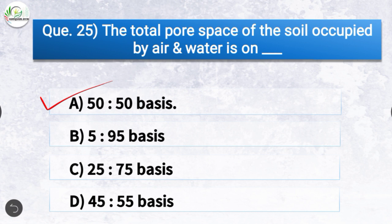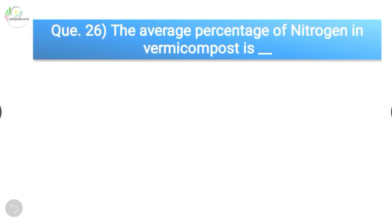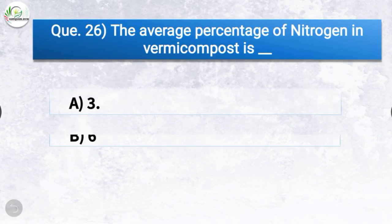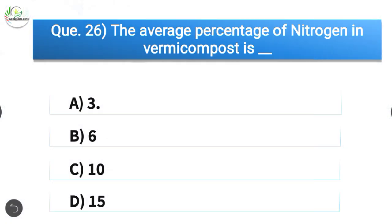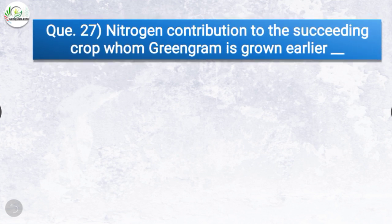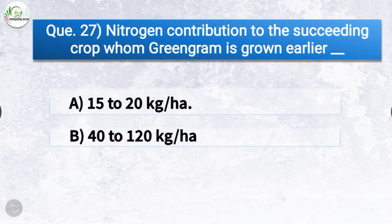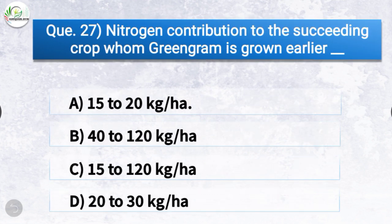Question number twenty-six: the average percentage of nitrogen in vermicompost is? The correct answer is option A, 3 percent. Question number twenty-seven: nitrogen contribution to the succeeding crop when green gram is grown earlier? The correct answer is option A, 15 to 20 kg per hectare.